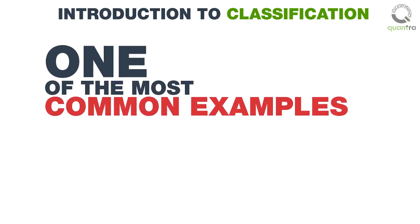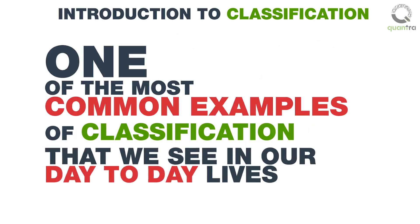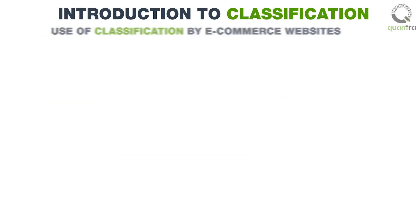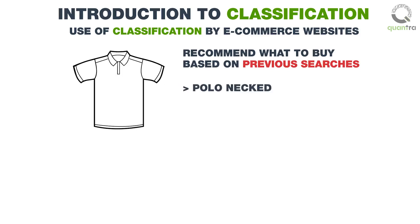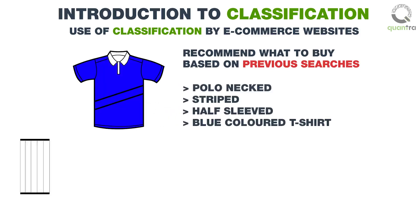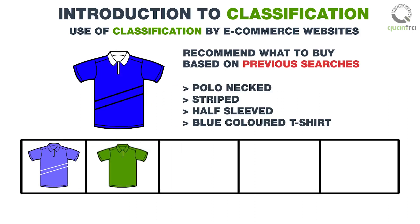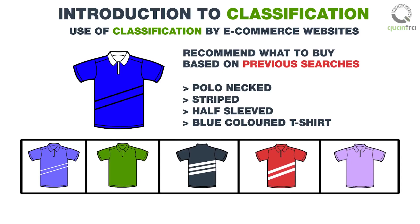One of the most common examples of classification that we see in our day-to-day lives is how e-commerce websites recommend what to buy based on your previous searches. For example, if you are looking for a t-shirt on an e-commerce website, and you check out a polo necked, striped, half-sleeved, and blue-colored t-shirt, the classifier classifies its type, design, and color, and then the website recommends you similar products.